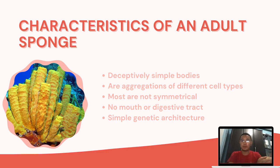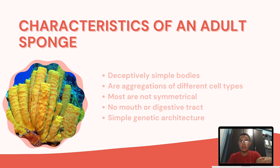This is the characteristic of an adult sponge. Adult sponges have deceptively simple bodies. They are an aggregation of several different cell types, including choanocytes, held together by an extracellular matrix. Most sponge bodies are not symmetrical, but some appear radial. A sponge body has neither a mouth nor a digestive tract. Thus, we expect it to have a simple genetic architecture, perhaps reminiscent of the first animals.